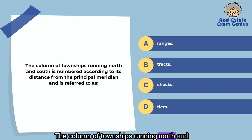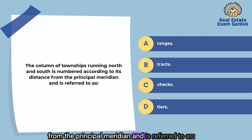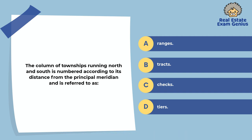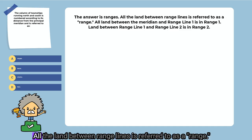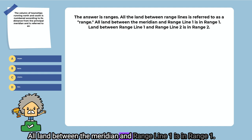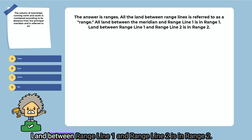The column of townships running north and south is numbered according to its distance from the principal meridian and is referred to as: ranges, tracts, checks, or tiers. The answer is ranges. All the land between range lines is referred to as a range. All land between the meridian and range line 1 is in range 1. Land between range line 1 and range line 2 is in range 2.